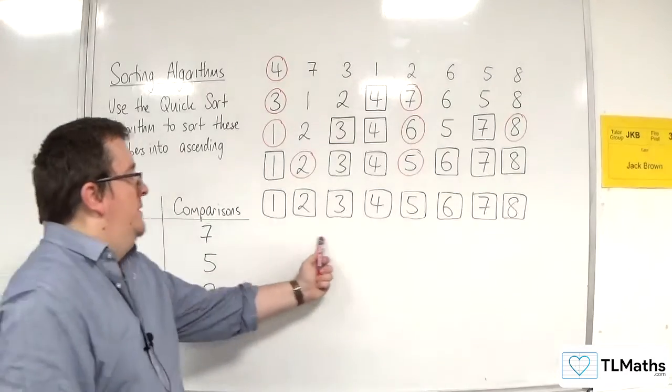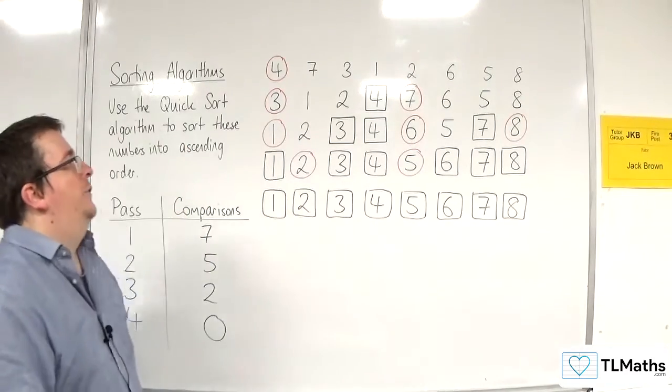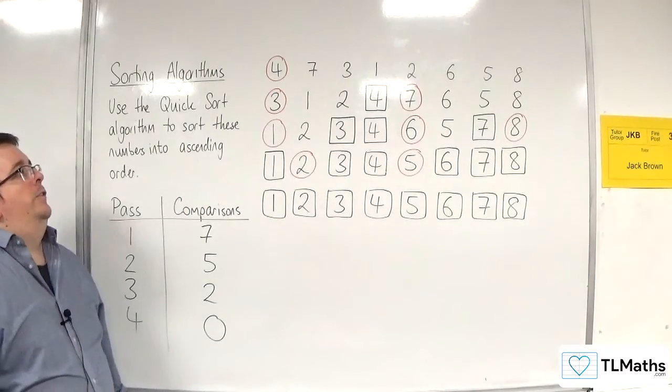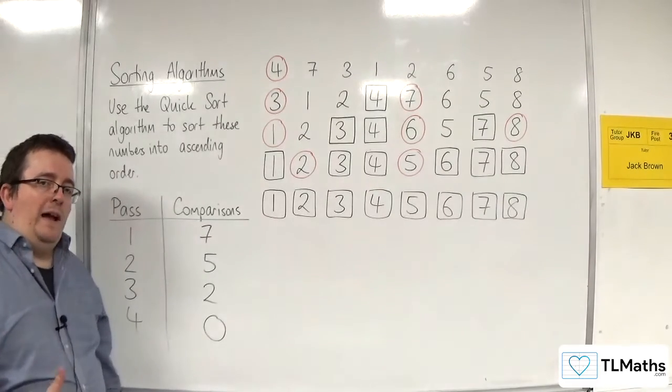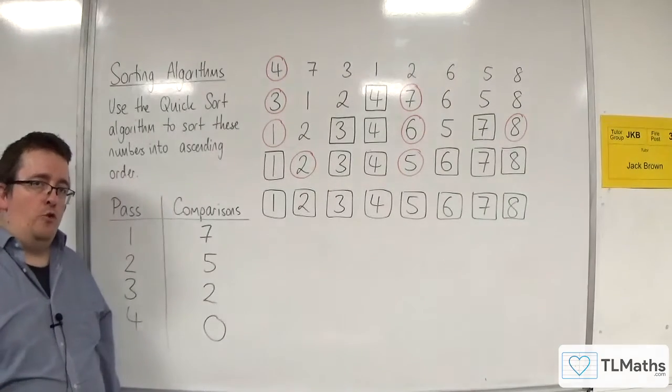And so this list is now in ascending order. So that is an example of how we use the Quicksort algorithm.